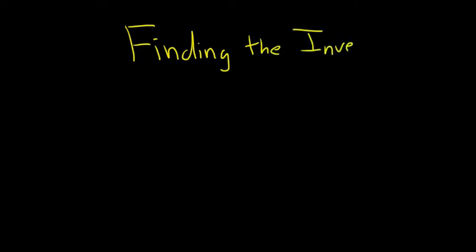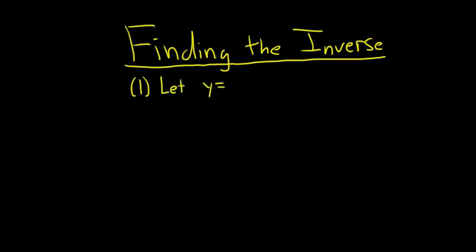Functions that have inverses are called one-to-one functions, and what follows everything will be one-to-one, so we'll always be able to find the inverse. The first step is you replace f(x) with y. So let y equal f(x), that's the first step.